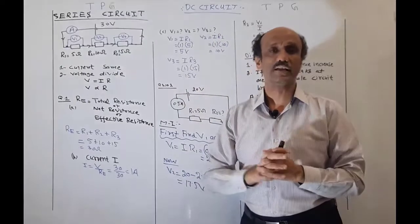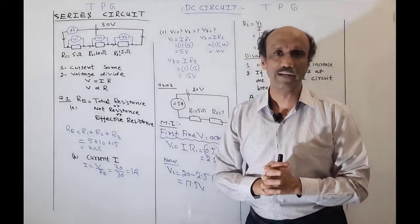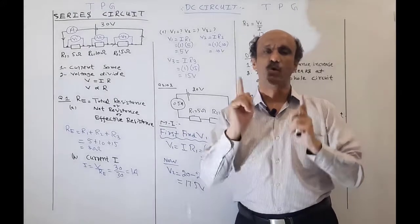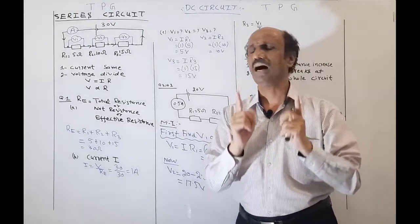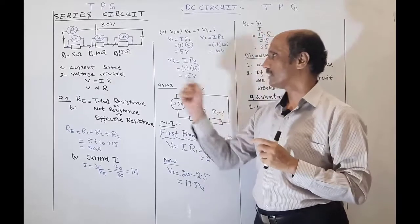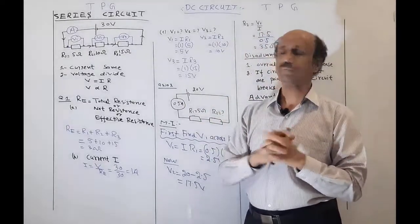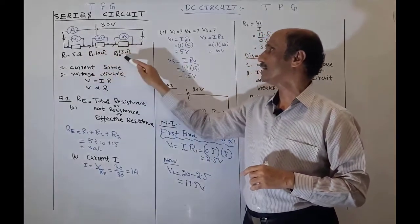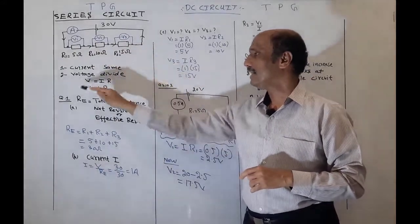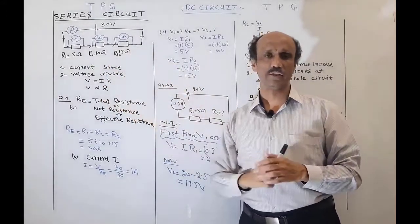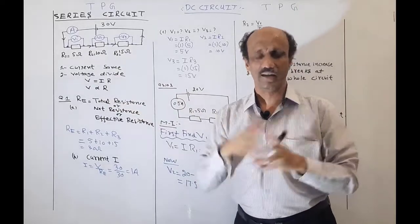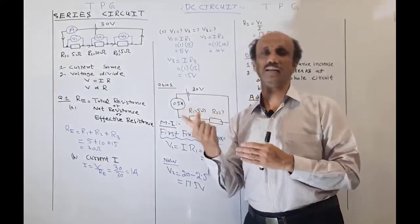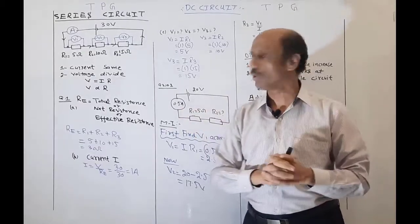The properties of a series combination: the current will always remain the same throughout, because there is only one path for the flow of current. The voltage will divide according to the value of resistance — voltage and resistance are directly proportional, meaning a higher resistance will have a greater potential difference across it.